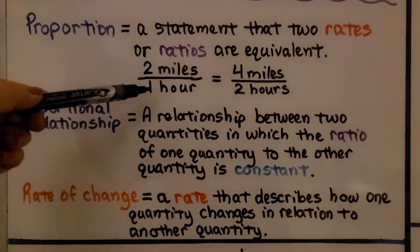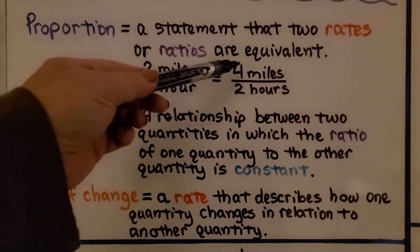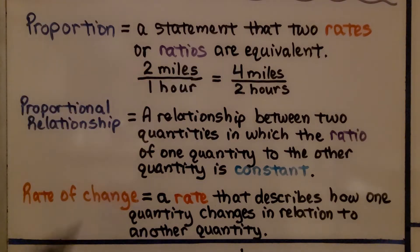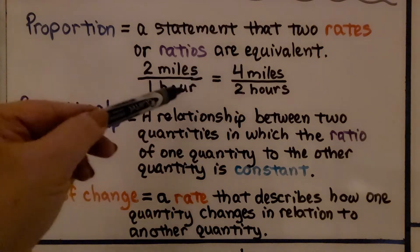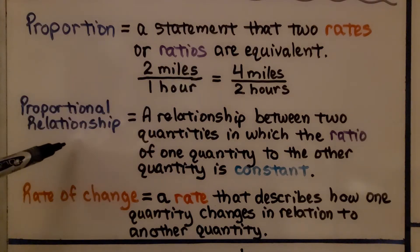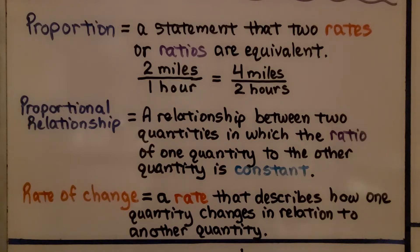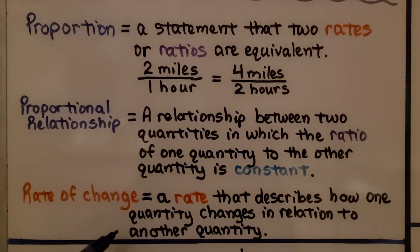Two miles to one hour is equal to four miles to two hours — they're in proportion to each other. A proportional relationship is a relationship between two quantities in which the ratio of one quantity to the other is constant. A rate of change is a rate that describes how one quantity changes in relation to another quantity.